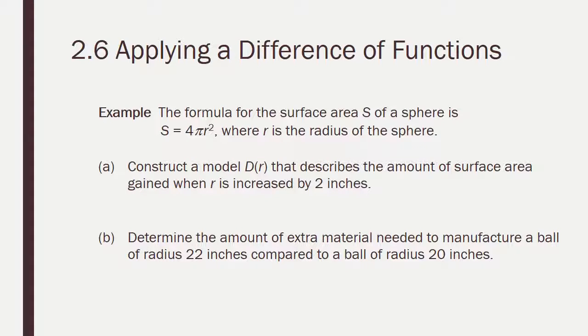Now, let's try another problem. The formula for the surface area s of a sphere is 4 pi r squared, where r is the radius of the sphere. You're going to construct a model that describes the amount of surface area gained when r is increased by 2 inches. And then we're going to determine the amount of extra material needed to manufacture a ball of radius 22 inches compared to a ball of radius 20 inches. Pause this recording and give it a try. Resume the recording to check your answer.